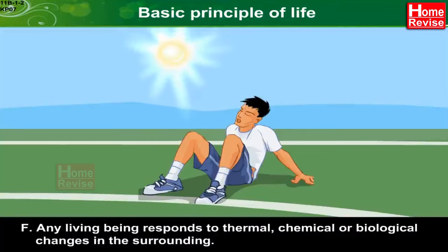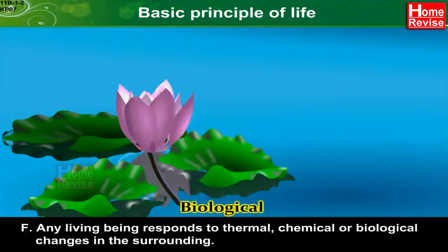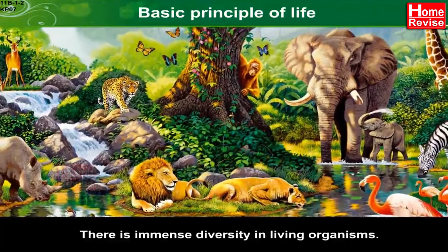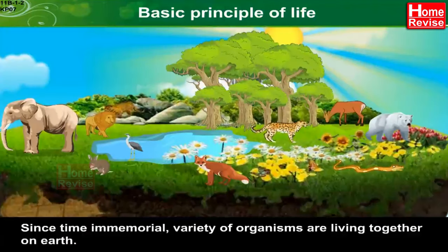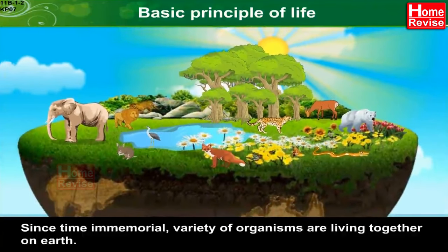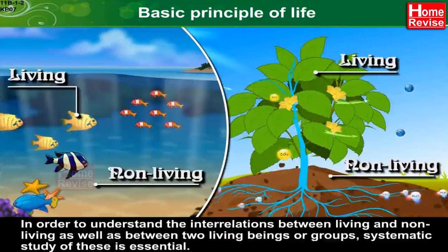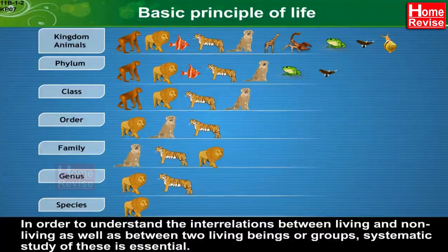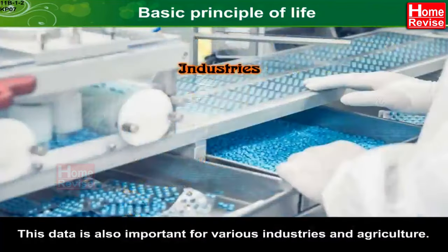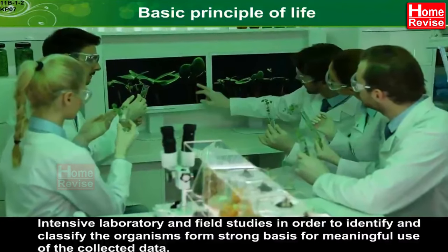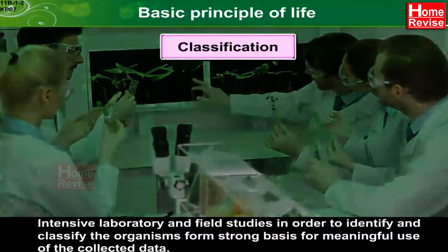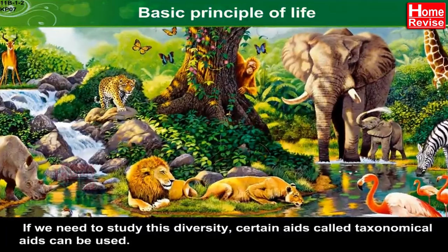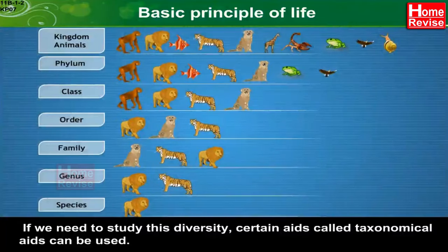F: Any living being responds to thermal, chemical, or biological changes in the surrounding. This is a unique property of living beings. There is immense diversity in living organisms. Since time immemorial, a variety of organisms have been living together on Earth. In order to understand the interrelations between living and non-living, as well as between two living beings or groups, systematic study is essential. This data is also important for various industries and agriculture. Intensive laboratory and field studies to identify and classify organisms form strong bases for meaningful use of collected data. If we need to study this diversity, certain aids called taxonomical aids can be used.